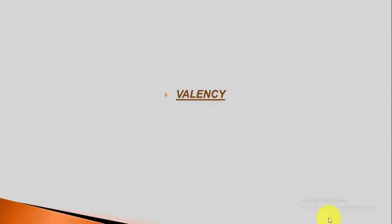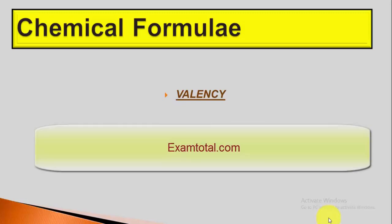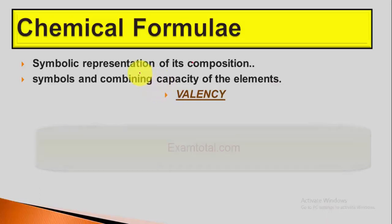An important topic to discuss now is how to write the chemical formula. What is the chemical formula? It is the symbolic representation of the composition of compounds. This is called a chemical formula.